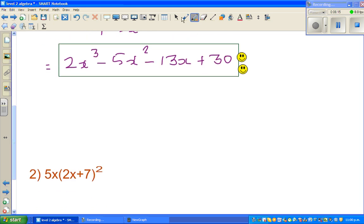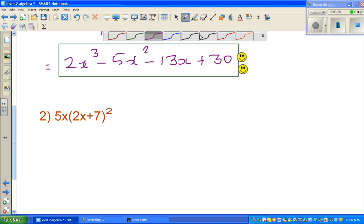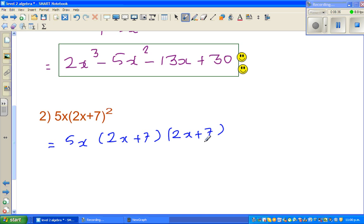Moving on to the next question. Now this is similar but here you have 5x times 2x plus 7 squared. So I'll write like this: 5x times 2x plus 7 times 2x plus 7. And now you can expand this. Or I'll expand this first. I'll multiply this with both of them.